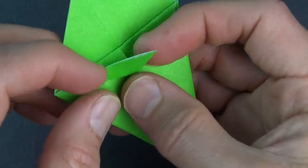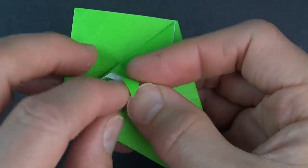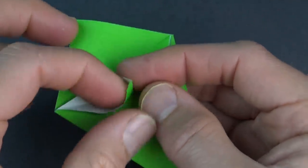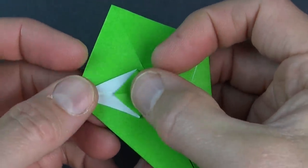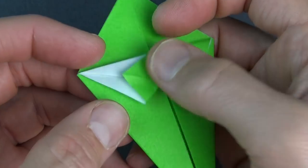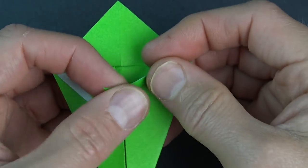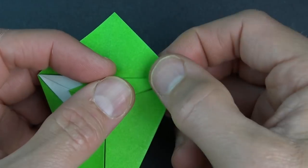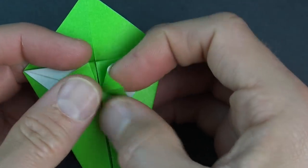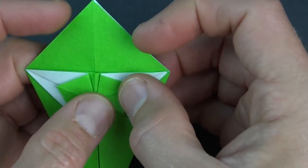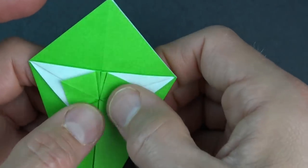And now open the pocket and squash it so that the point lands on the edge. And repeat on this side.